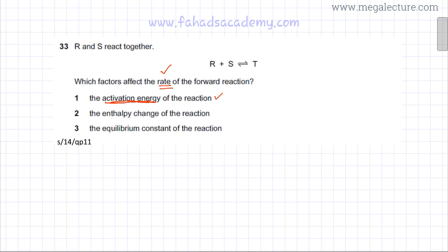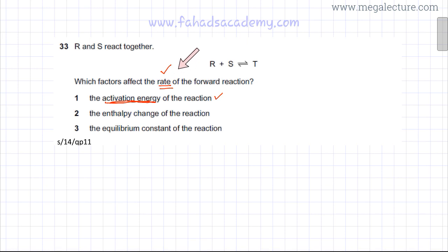Other things you can do to increase rate: you can increase pressure so the particles are closer together, you can increase concentration, or you can reduce the particle size. All these factors affect the rate of the reaction.